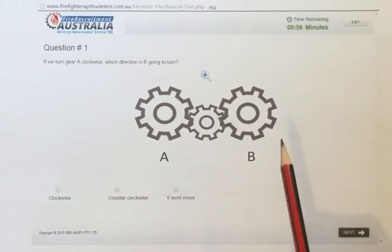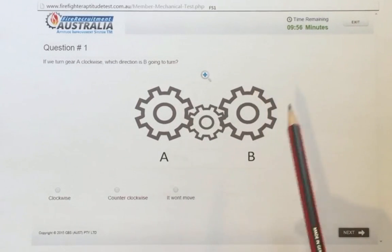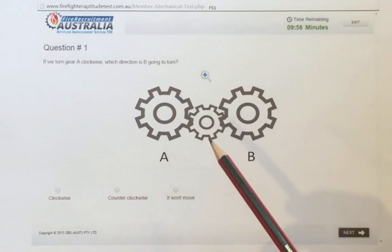Okay, so this will be a tutorial for mechanical reasoning tests for the fire series one. The first one I'm going to run through is just cogs and gears.